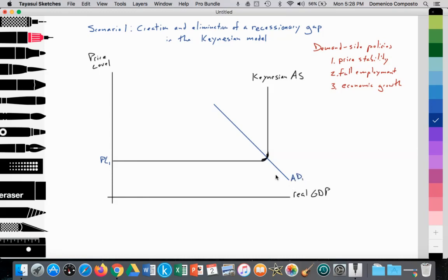Aggregate demand curve one, it's intersecting with the Keynesian aggregate supply curve. So it's providing an equilibrium at point A, right at this spot, point A. And here we get real GDP at full potential.